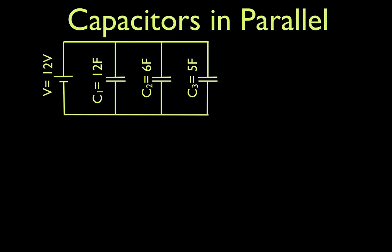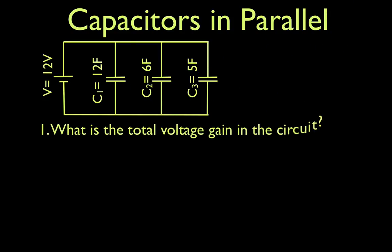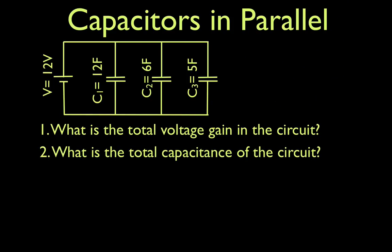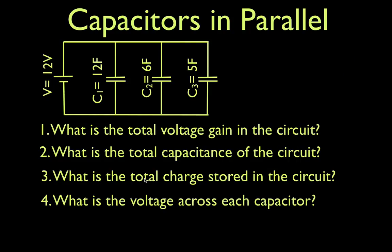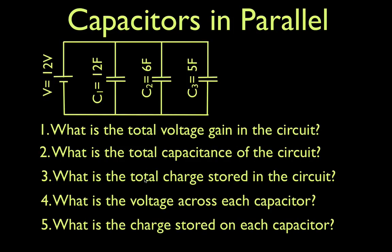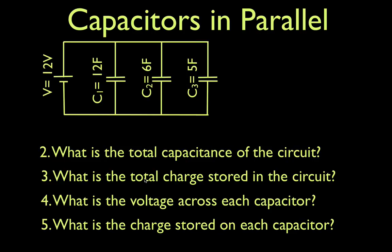We're going to do five different things in this video. First, we're going to figure out the total voltage in this circuit. Then we're going to get the total or equivalent capacitance of the circuit. Then we're going to get the total charge stored in the circuit. Those are our three totals: total voltage, total capacitance, and total charge. After that, we're going to get the voltage drop across each capacitor, and then the charge stored on each capacitor.